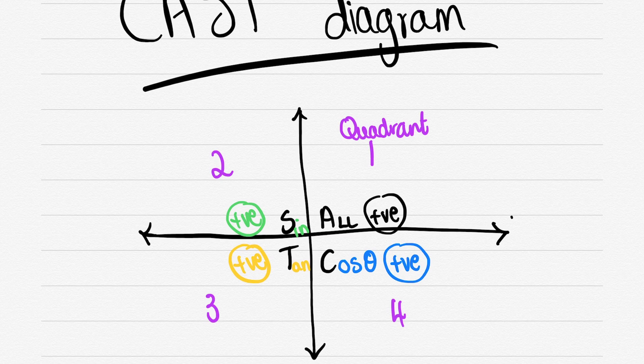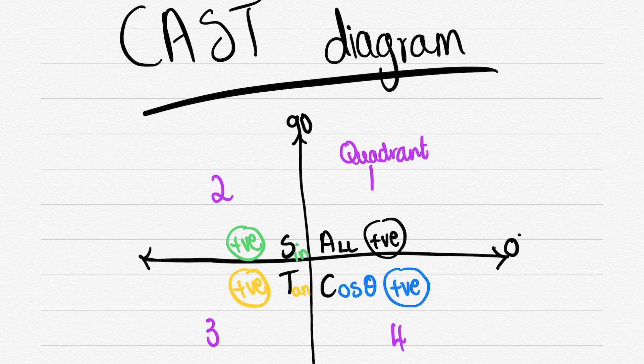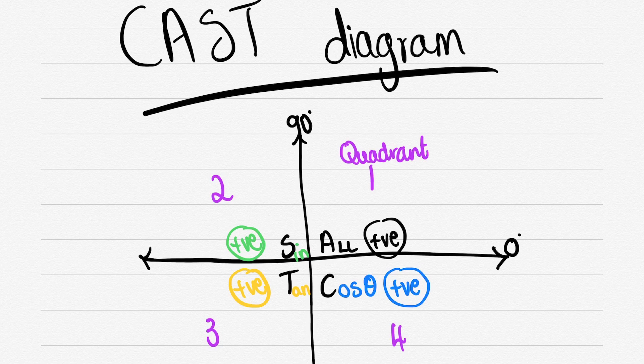However, if you use sine you'd get a negative answer because sine would be y over r, your y would be down and your r is always positive, so you'd have a negative answer in the bottom left.